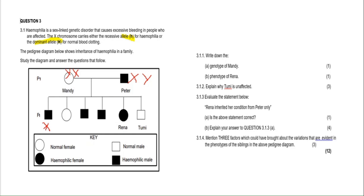Mandy has two possibilities: either she is homozygous normal — X capital H, X capital H — or she is a carrier — X capital H, X small h. A carrier has the hemophilic gene, but the normal gene masks it. You don't know which one yet, so write both possibilities. As a tip: looking at her offspring, four out of six children are affected, suggesting such a high rate means Mandy must have been a carrier — the second option.